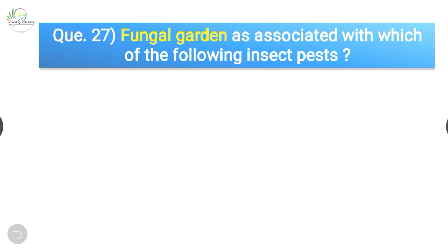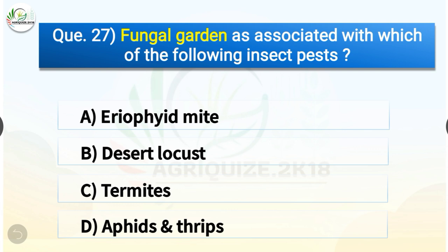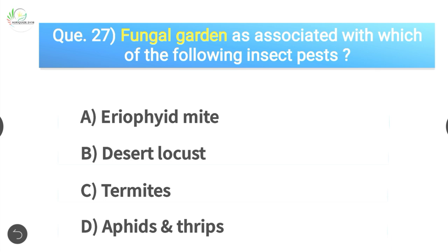Question number twenty-seven: fungal garden is associated with which insect pest? Options are euryphid mite, desert locust, termites, or aphids and thrips. The correct answer is option C, termites. Fungal garden is a habitation of termites containing a spongy dark brown reddish coral-like comb structure constructed by workers and fed to nymphs.